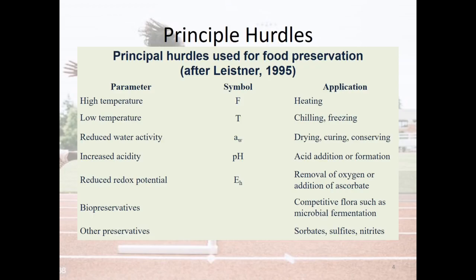The hurdles used for food preservation are described by parameter, symbol, and application. The first parameter is high temperature, expressed by the symbol F, and its application is heating. The second hurdle is low temperature, expressed by the symbol T, with applications including chilling, freezing, and thawing.